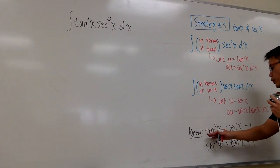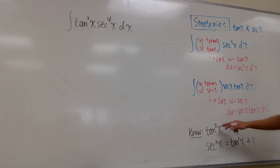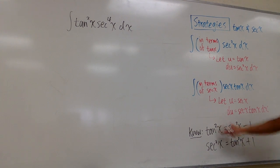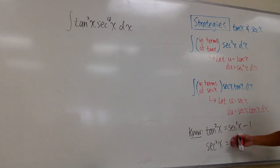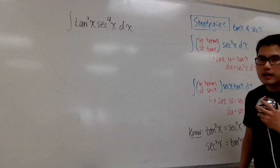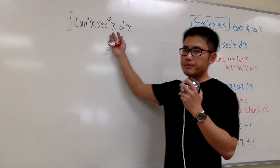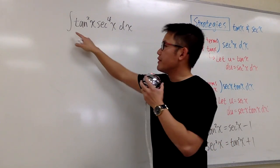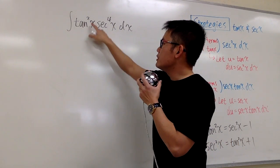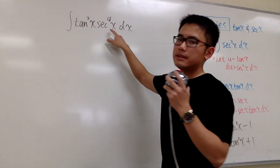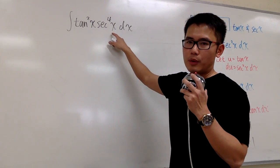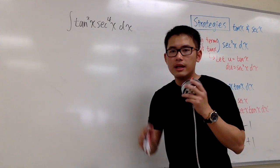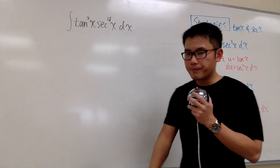These two are the general strategies. We'll also utilize the trig identity for tangent squared and secant squared x. Here is an example: the integral of tangent squared x times secant to the fourth power x.